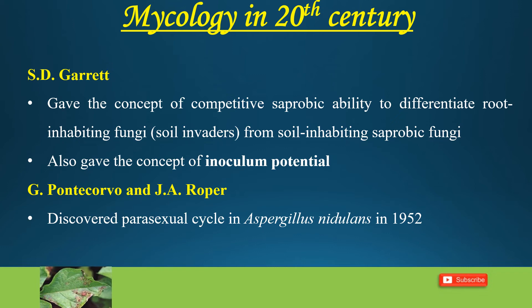Later, Pontecorvo and J.A. Roper discovered the parasexual cycle in Aspergillus nidulans in 1952. The parasexual cycle is an alternative to sexual reproduction. In this parasexual cycle, genetic recombination is achieved mainly through mitotic crossing over and haploidization. It is also sometimes called somatic recombination.